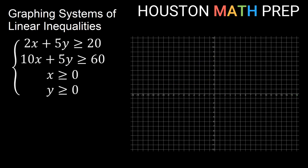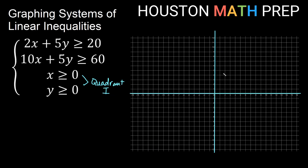Let's look at our final example and see if it's bounded or unbounded. We have x greater than or equal to 0 and y greater than or equal to 0 — that signals right away we need to be in quadrant 1 or on the bordering axes. Let's section that off and move on to the other inequalities.